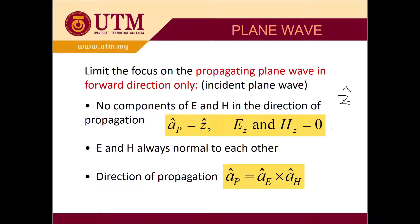So E-z and H-z are equal to zero. E and H are always normal — perpendicular — to each other. The direction of propagation is given by a-p equals a-E cross a-H. Using this, the cross product of E in the x direction and H gives the direction of propagation, meaning E and H are always perpendicular to each other.